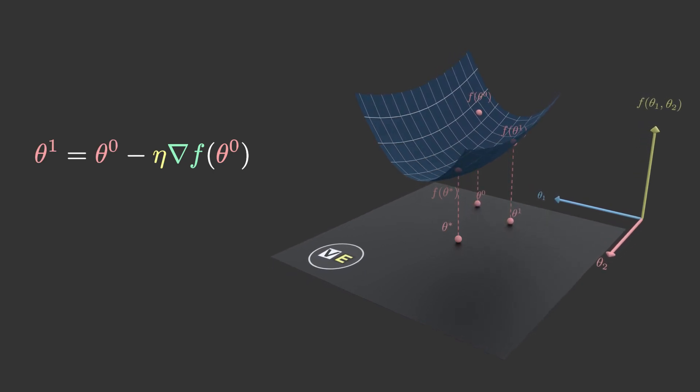Gradient descent continues in an iterative fashion. It computes the negative gradient at the new point, takes a step in that direction, and so on and so forth.